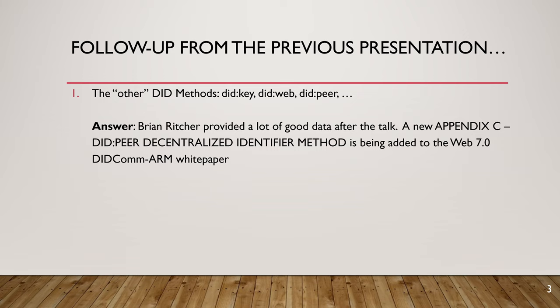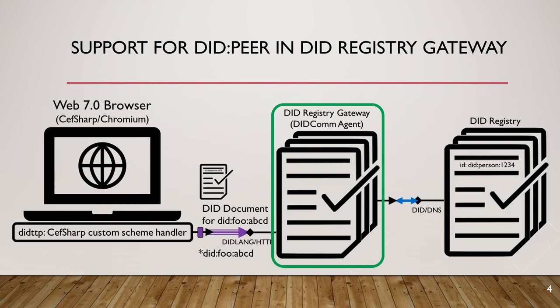As a response to that, there's a new Appendix C going into the Web 7.0 DIDCOM ARM white paper that recaps Bryant's discussion. In the architecture, because Web 7.0 isn't based entirely on DIDCOM agents, the DIDCOM registry is not exposed using the traditional DID resolution protocol. It's actually exposed by a DIDCOM agent — the DID registry gateway — and you make inquiries by passing in DIDCOM messages.